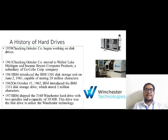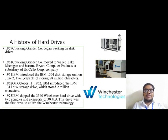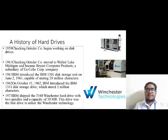Then in the year 1962, the IBM 1311 disk storage drive was introduced by IBM on October 11th, which was capable of storing only 2 million characters. Then in the year 1973, the IBM 3340 Winchester hard disk drive was shipped, which had two spindles and a capacity of 30 MB. This drive was the first to utilize Winchester technology.